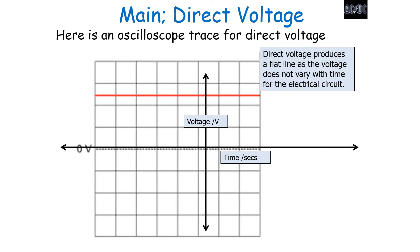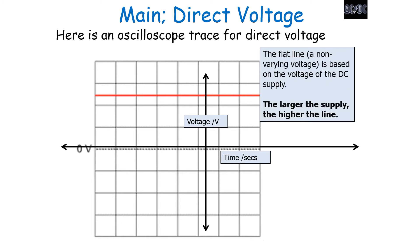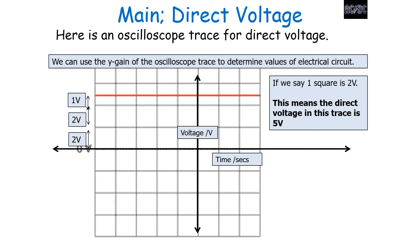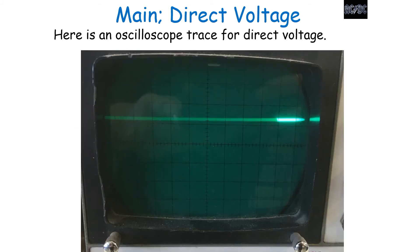A direct voltage produces a flat horizontal line if the time base is turned back on, as the voltage does not vary with time. The larger the supply, the higher the line on the oscilloscope screen. For example, if the y-gain is set to 2 volts and the line is two and a half squares above the axis, that means the direct voltage is 5 volts due to the scaling of our y-gain. Here is an example of an oscilloscope trace for direct voltage with the time base turned on.